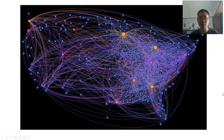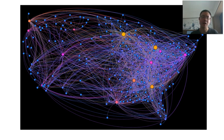Here is another example — guess what it is. This is a US map of flight networks. Each dot is an airport. Interestingly, I once had an international student who couldn't recognize this map — which is understandable given how messy it looks. He eventually did pretty well in this course.